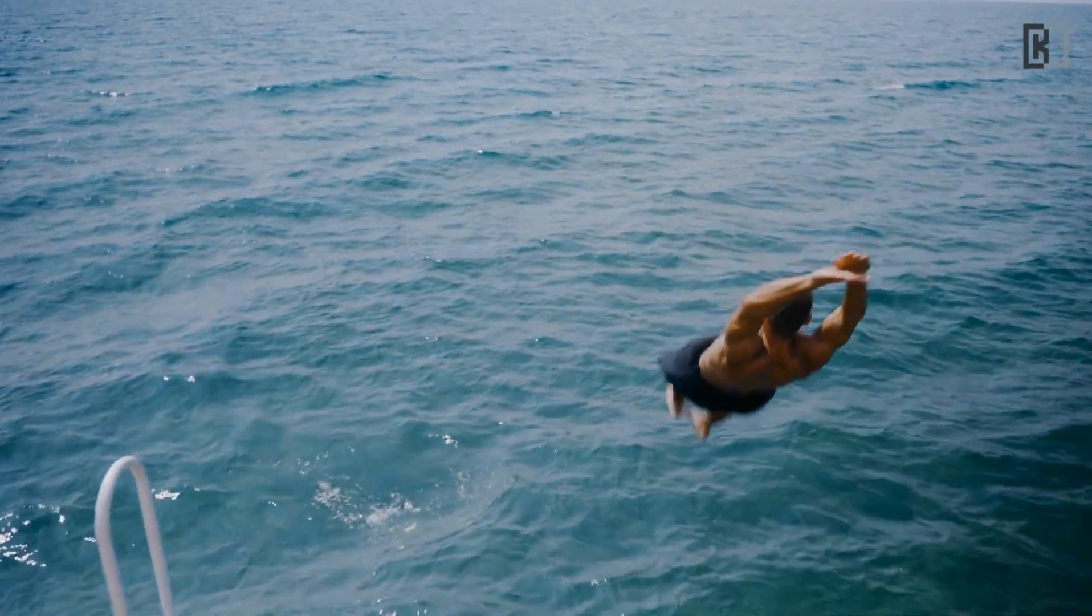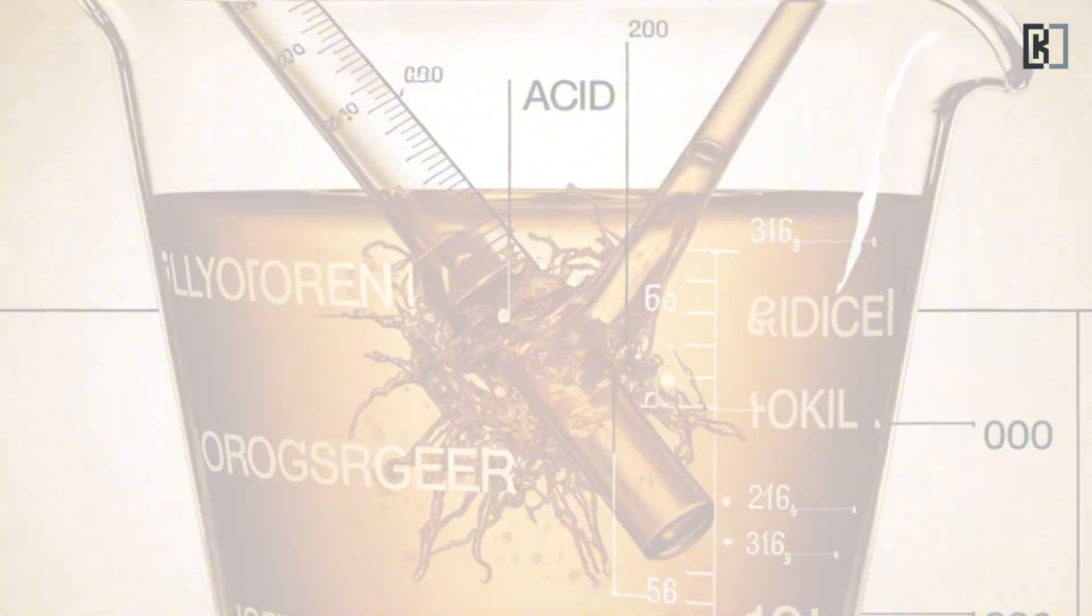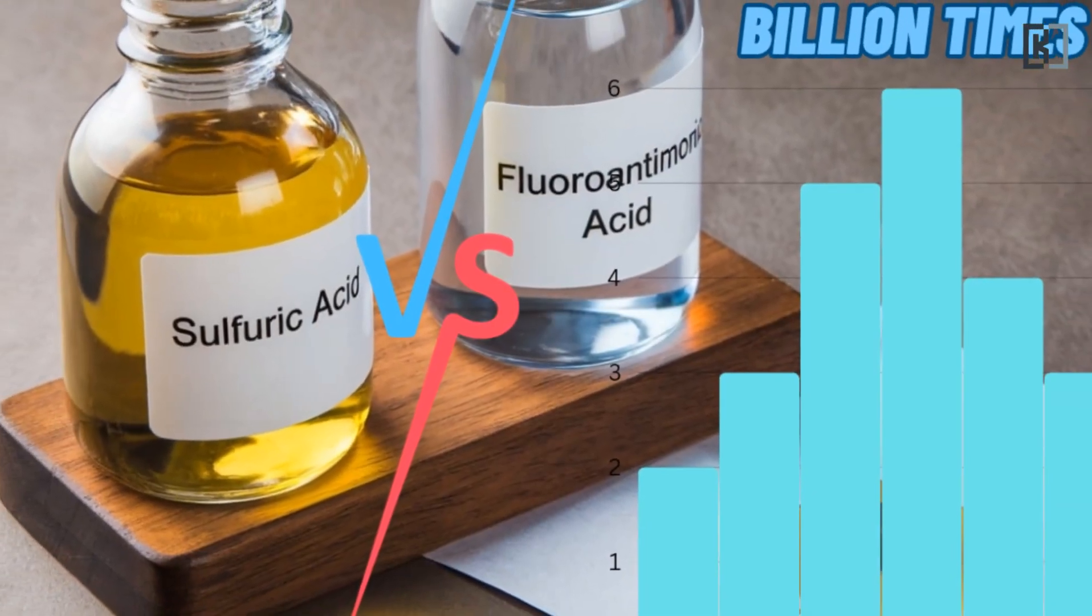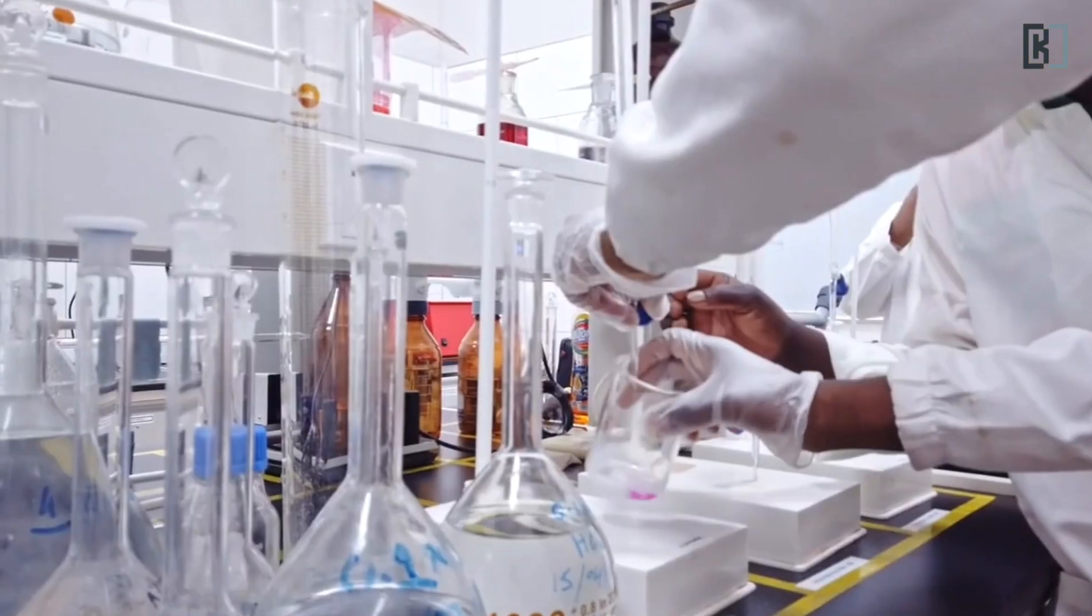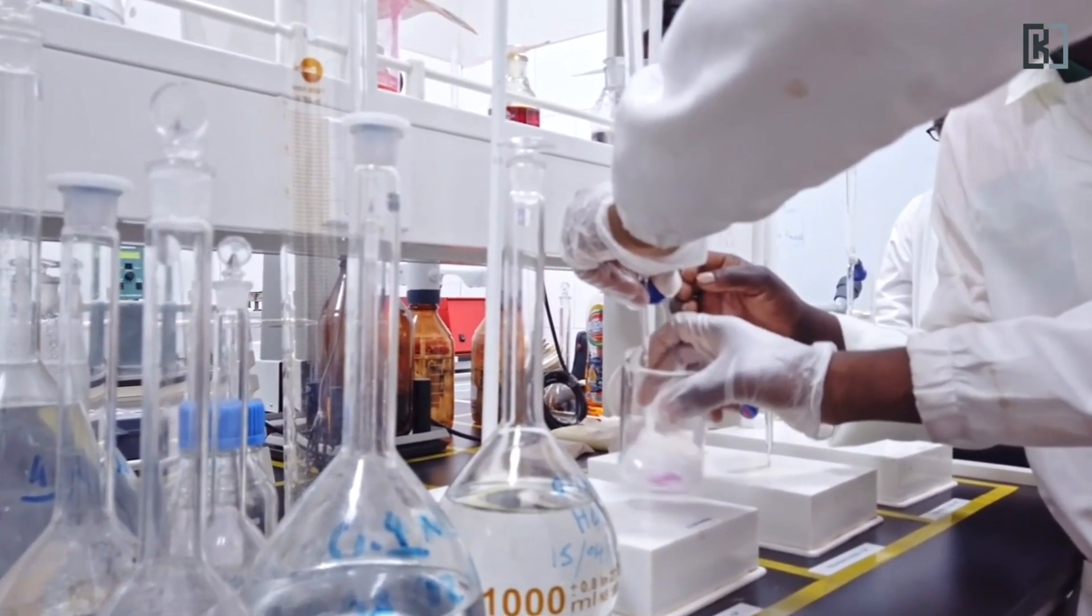Alright, let's dive into it. Meet fluoroantimonic acid. Sounds like a mouthful, right? This bad boy is a super acid, like the superman of acids. It's about a billion times stronger than sulfuric acid. Yup, the same sulfuric acid you learned about in school. Imagine that.